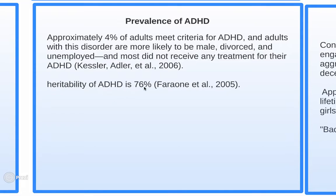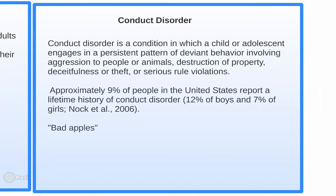The heritability of ADHD is 76 percent. Many people with ADHD are still able to go to college and succeed academically. Medications, as mentioned in the consciousness chapter, facilitate attention and learning. They have been used to academically enhance performance in people without ADHD. If you have ADHD, they help you function as a normal person; if you don't have ADHD, they help you function better.